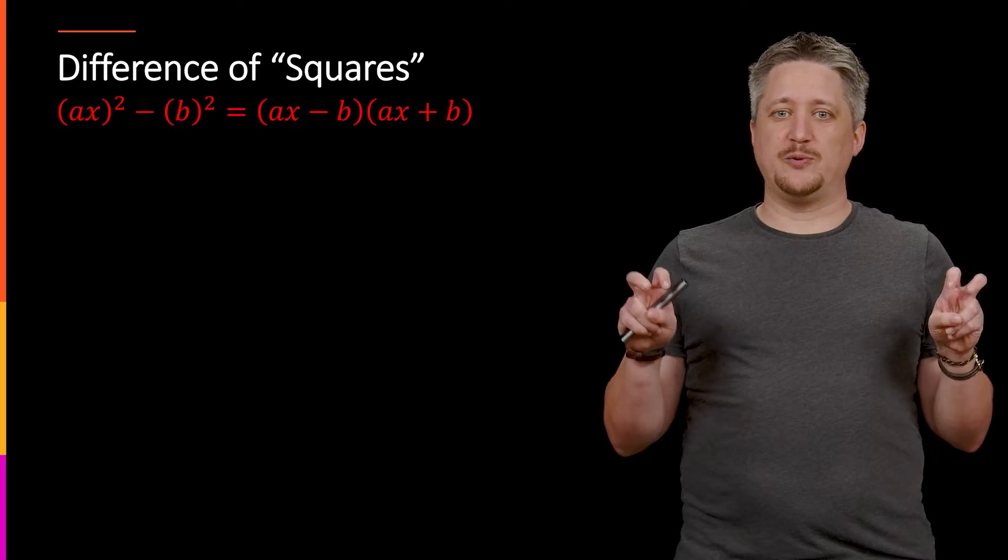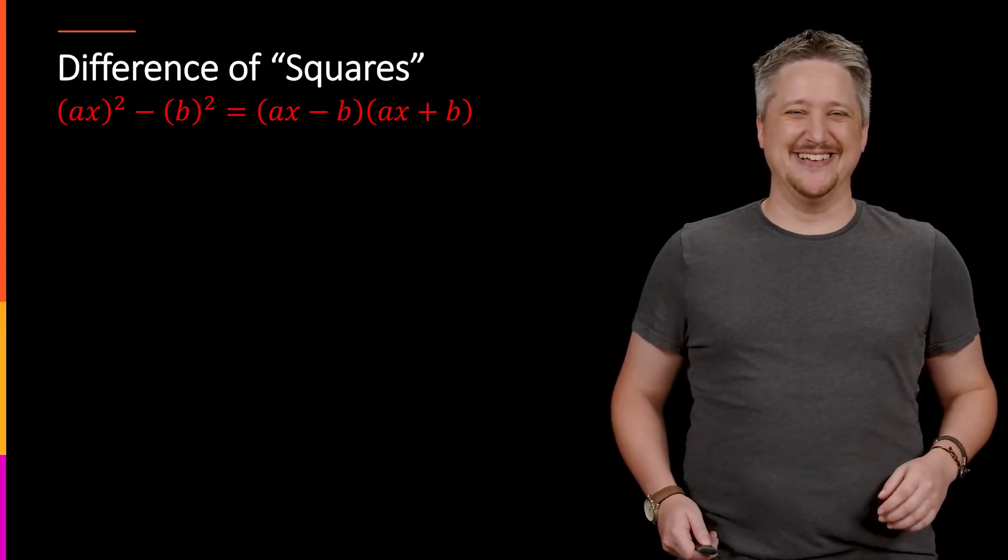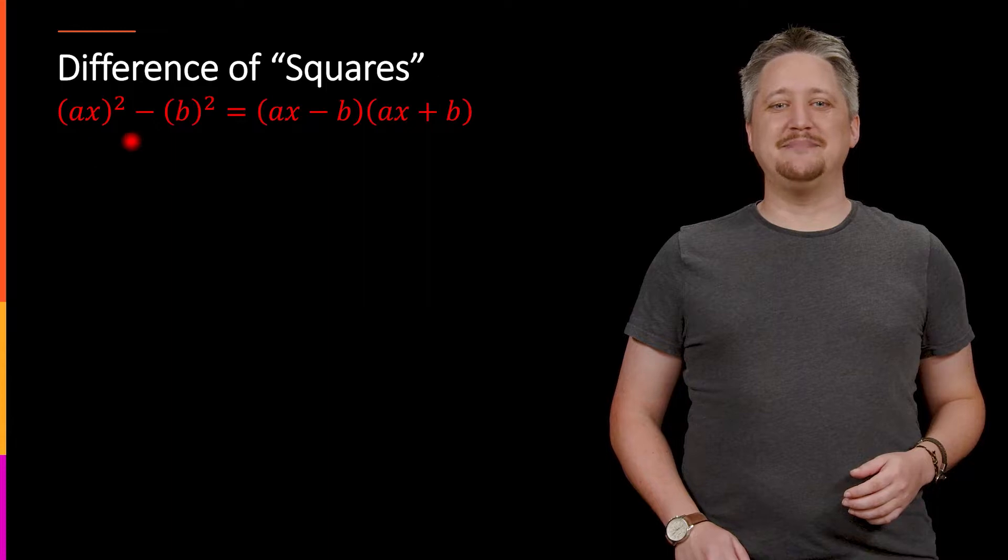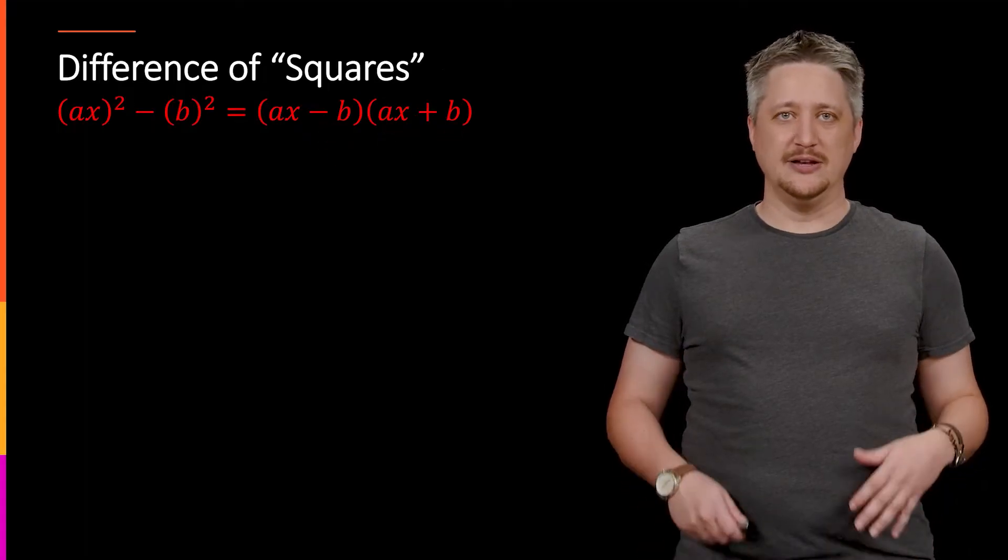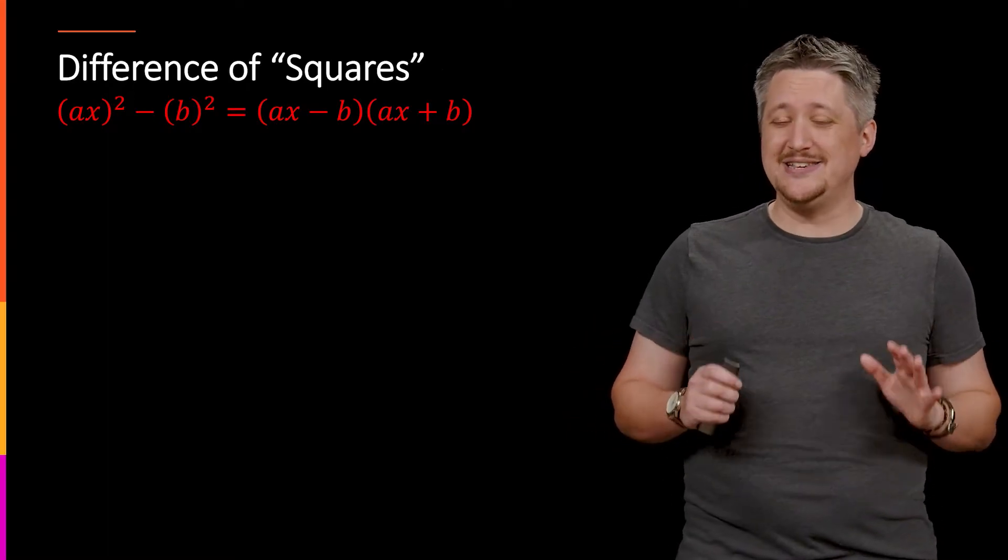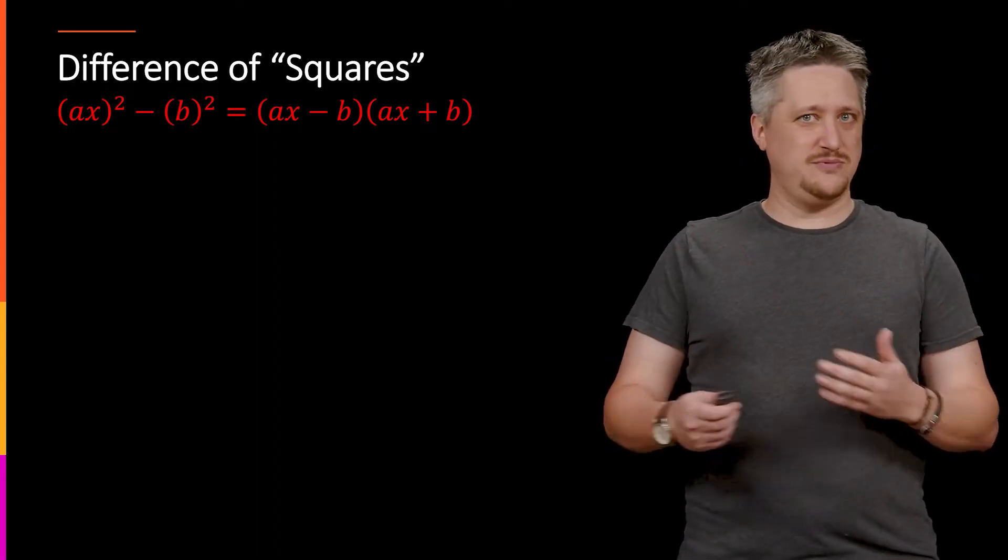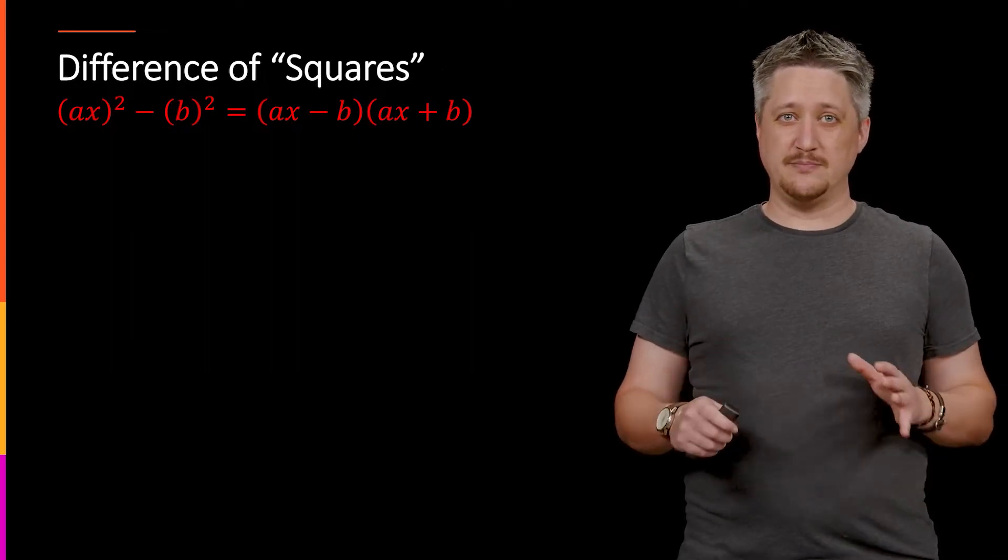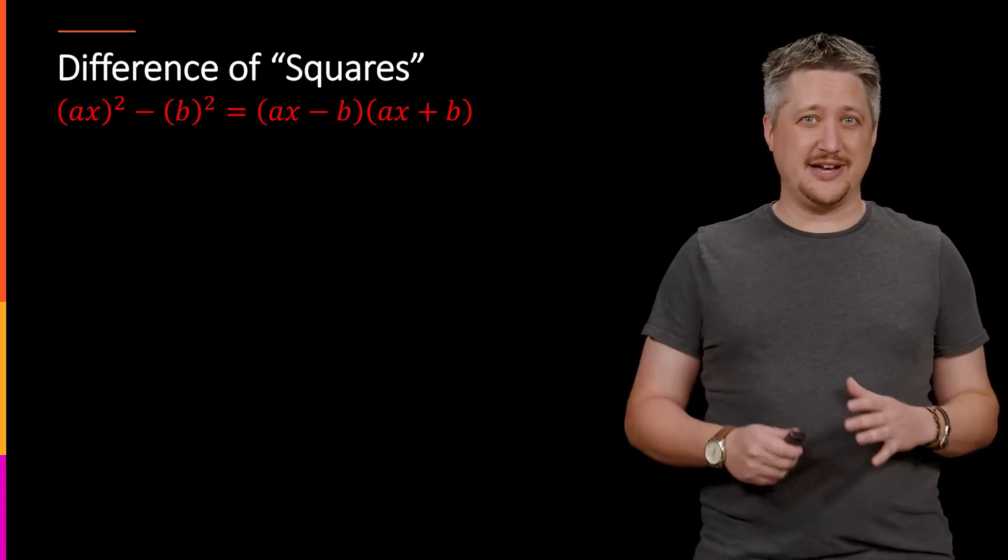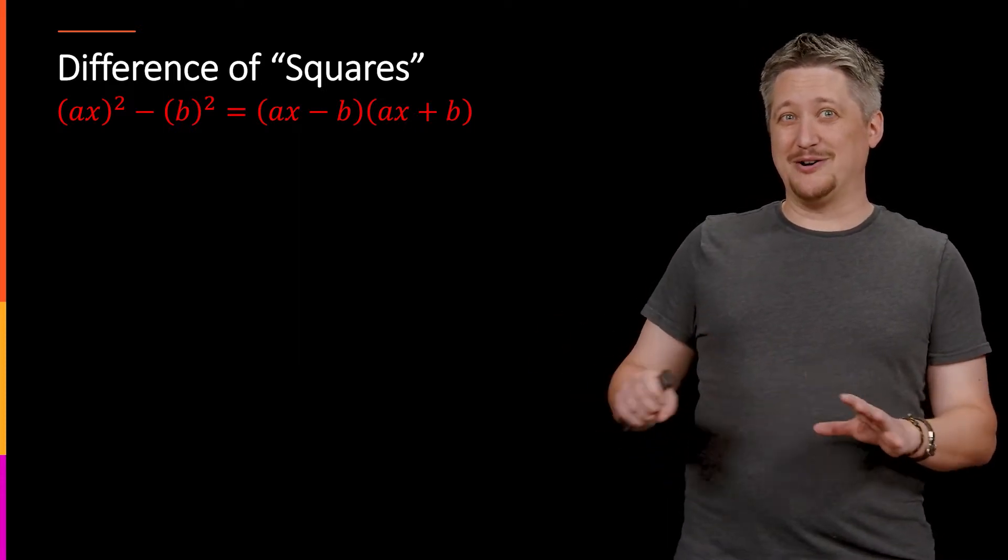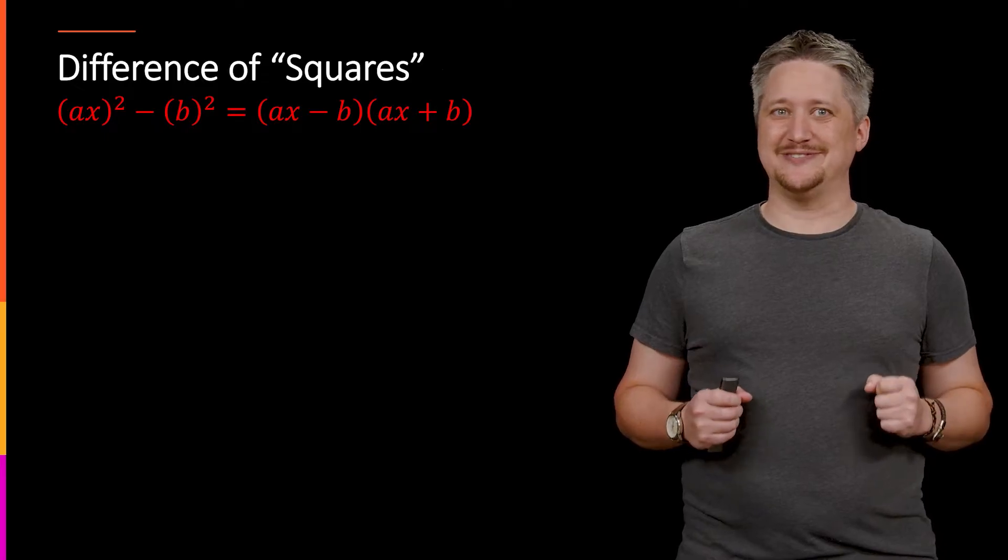So first one is the difference of squares. The idea here is that we have some term squared minus term squared and we can quickly factor this by having the difference of those two base terms and the sum of those two base terms. I'll do an example in just a second but I want to point out that it's really important that this is a difference of squares because if you had a sum this does not work at all. In fact, there's no real number version of a sum of squares formula. So it's really important that we have a difference, a minus sign here.